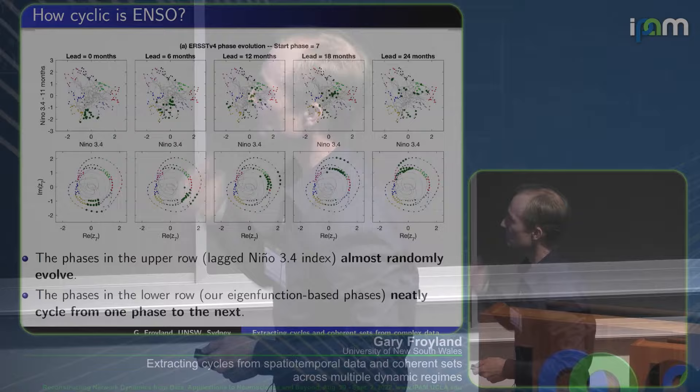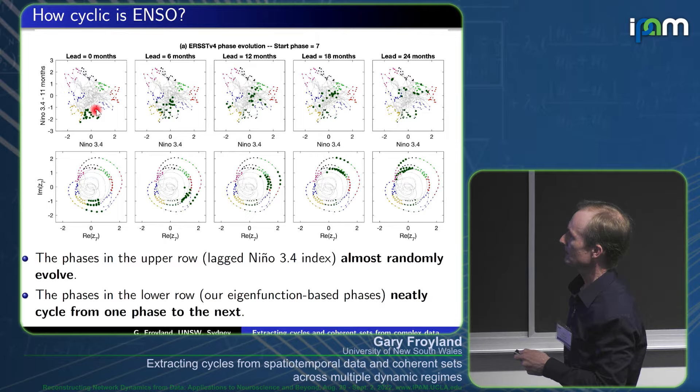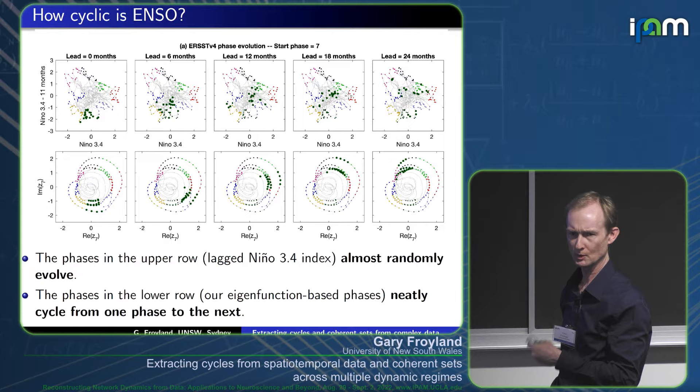If I try the same thing with Niño 3-4 — lagging by 11 months, which worked slightly better — and advance the phases, they go all over the place. The Niño 3-4 scalar value is not as self-consistent as a cycle. One thing that might be going wrong with ENSO predictability from the Niño 3-4 perspective is that you're categorizing the current state in the wrong phase; if you categorize it correctly, it may be more predictable.